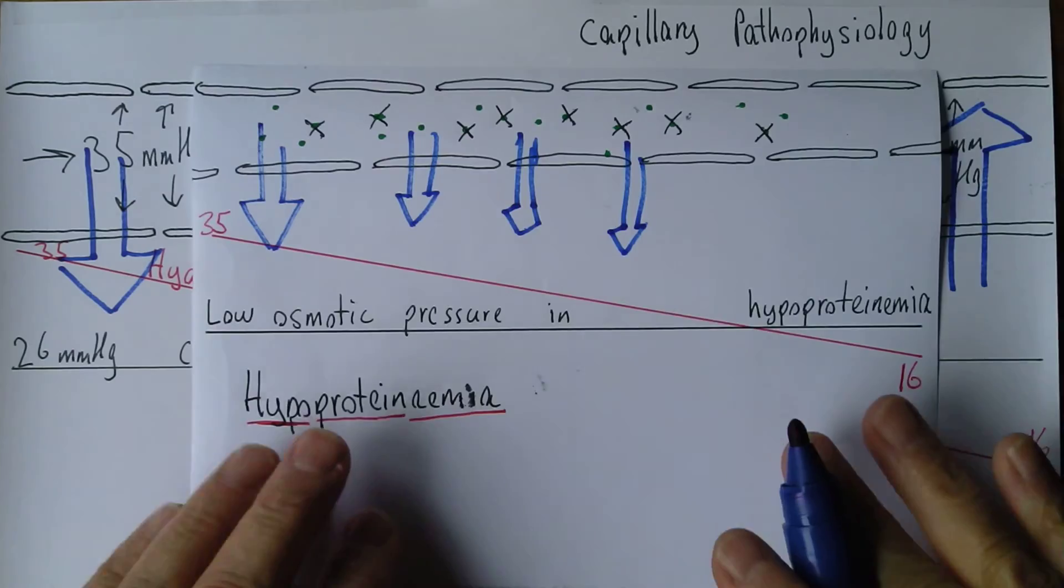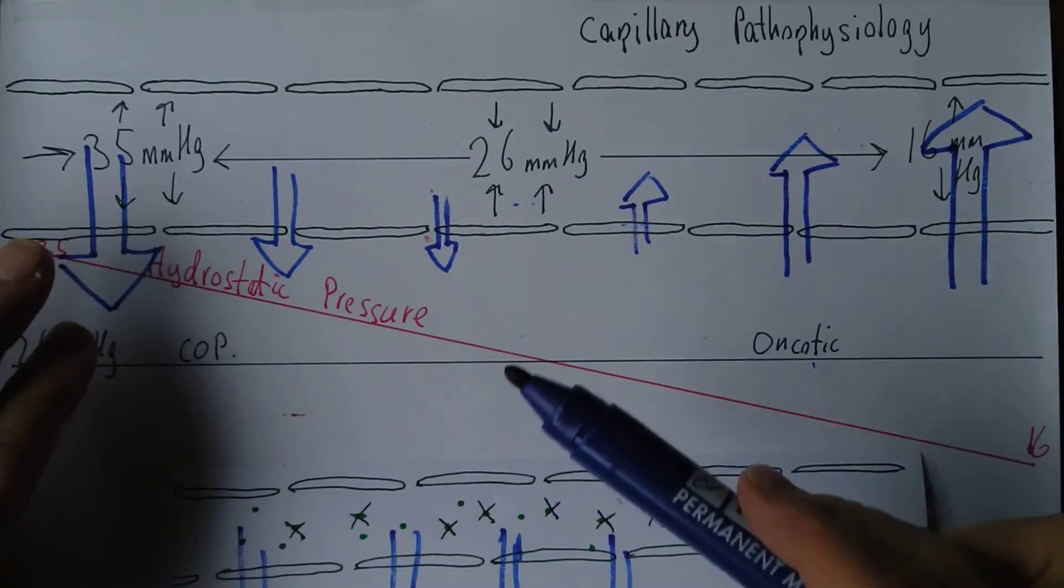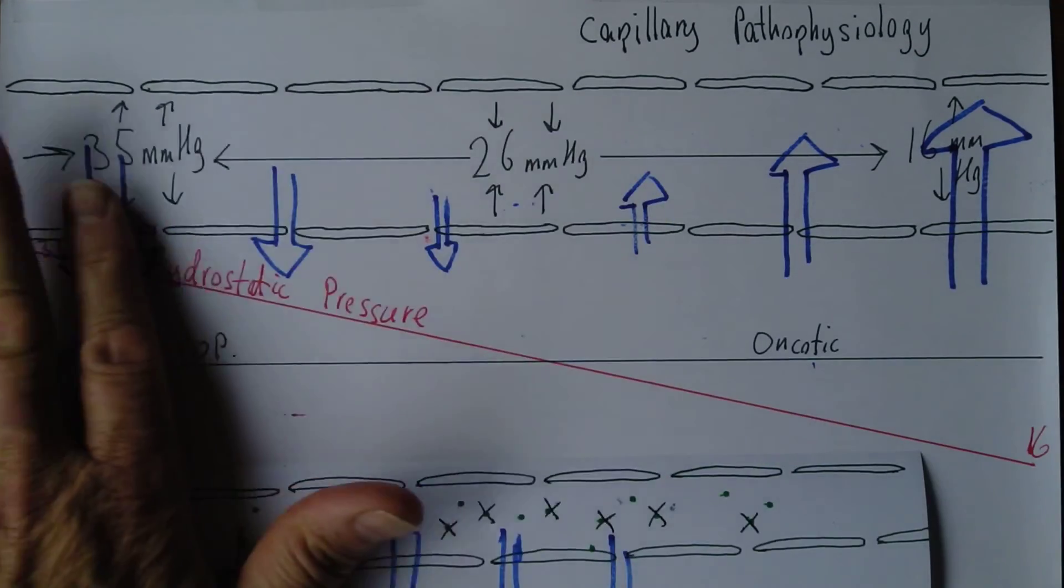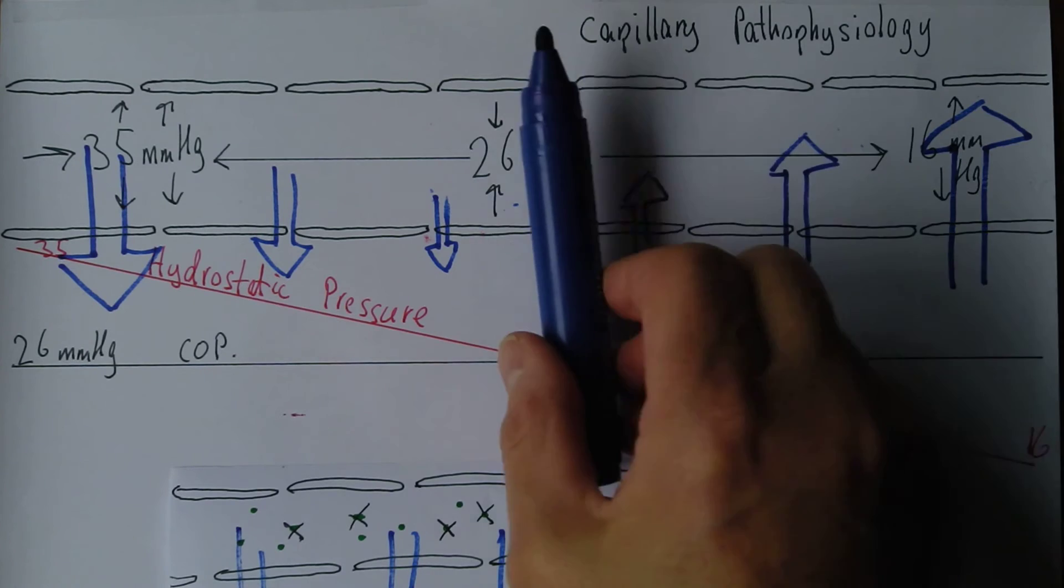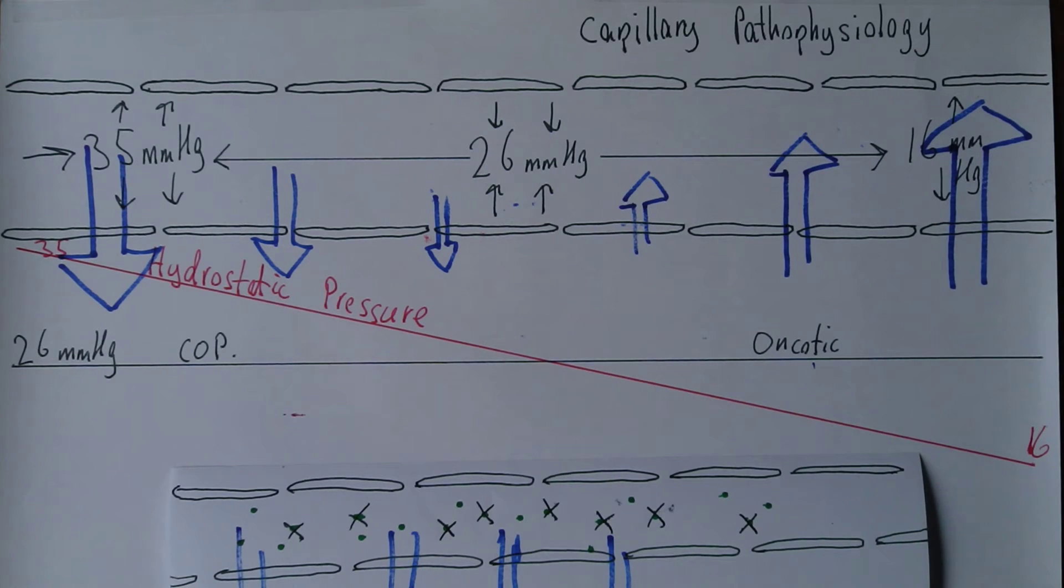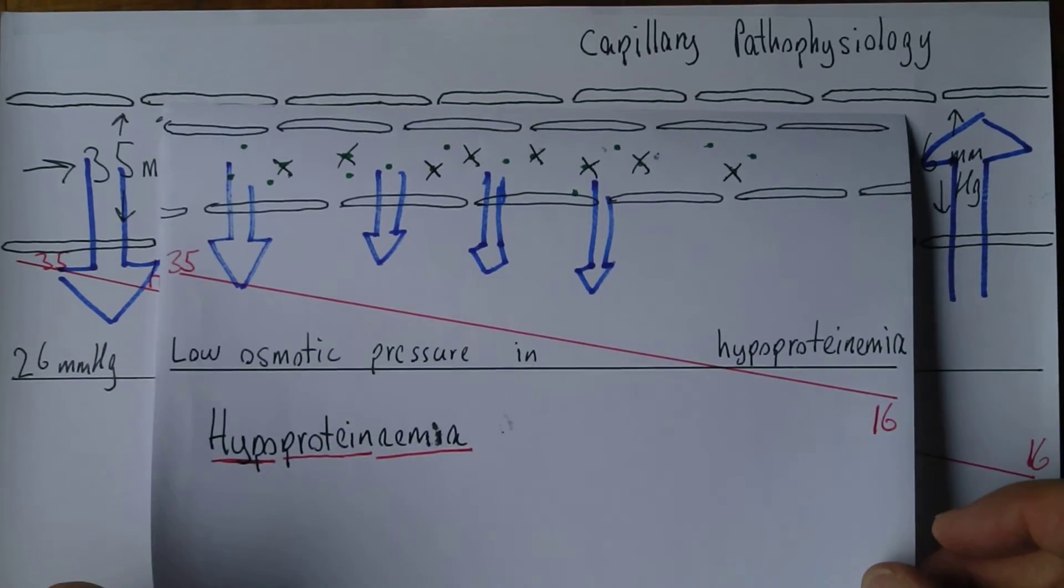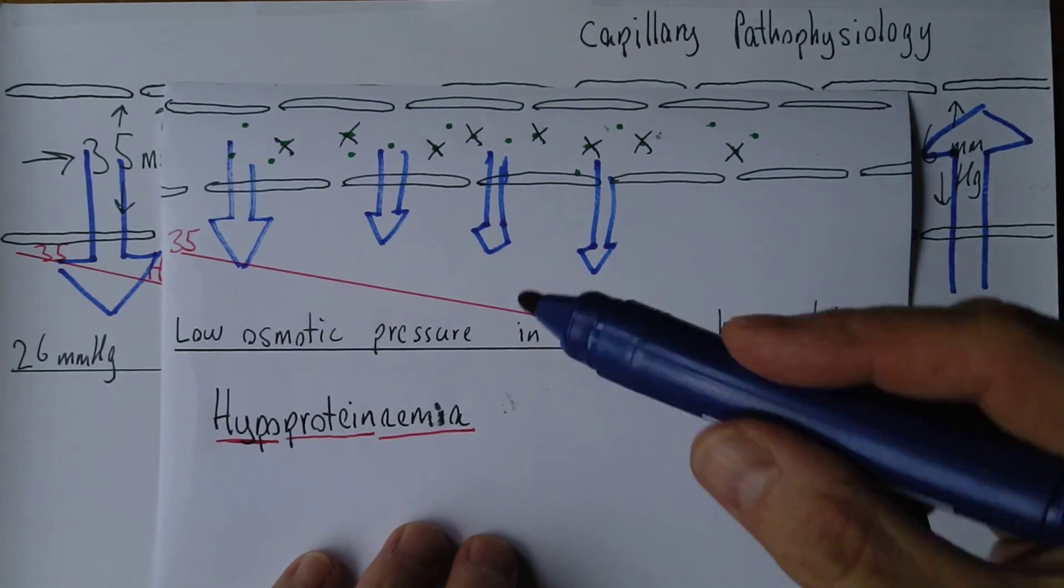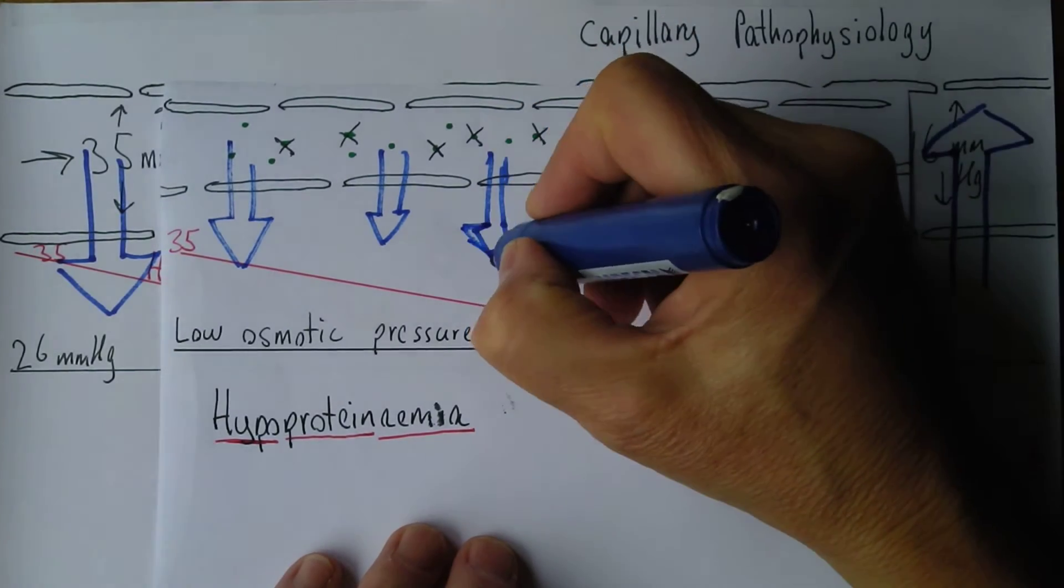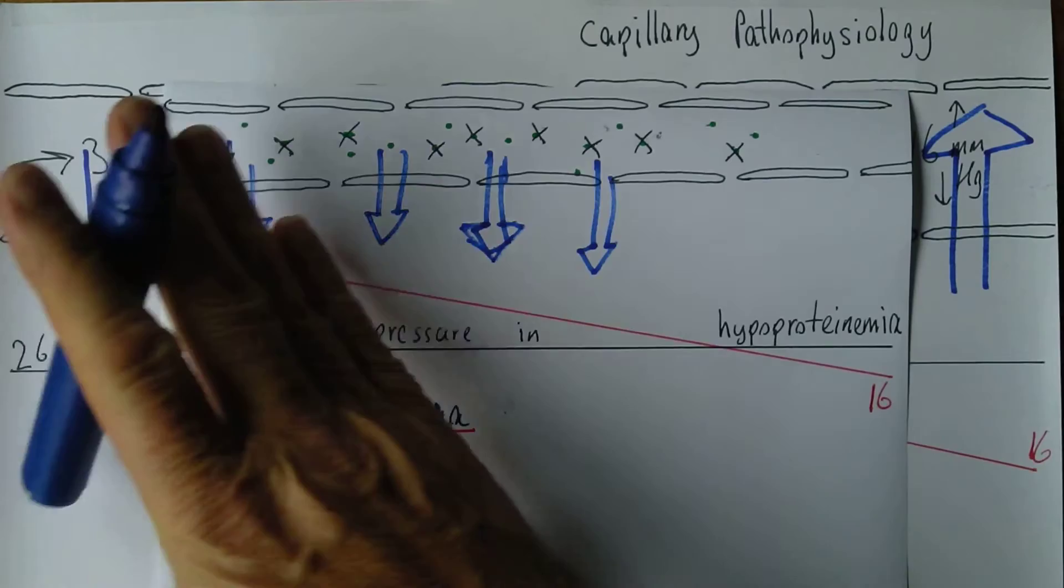In the normal situation, it's only the first half of the capillary where there's filtration and the second half is reabsorption. But now the hydrostatic pressure is going to be greater than the oncotic pressure for much more of the length of the capillary.